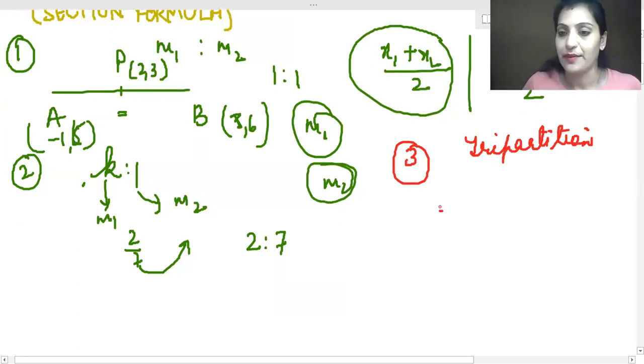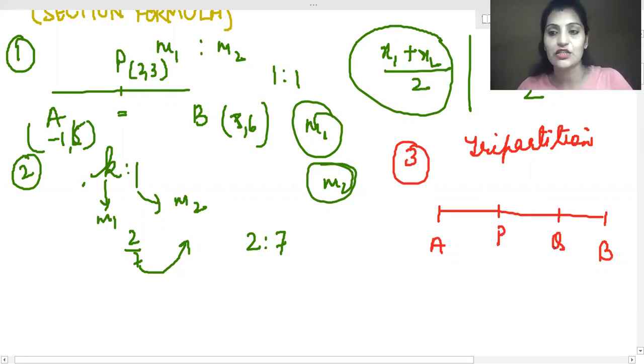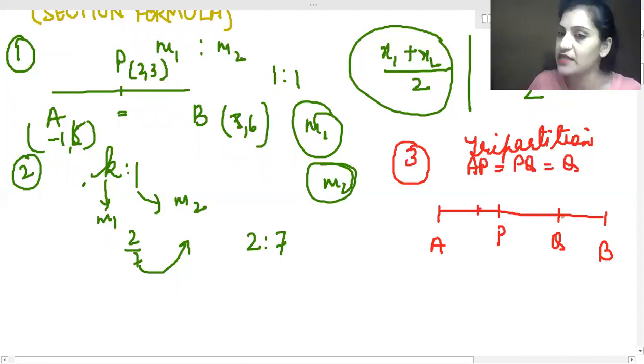Suppose there is a line segment A and B. You have two points in between. We have two points, and the two points divide in three parts. In this case, the three parts will be equal. So that means AP is equal to PQ, it is equal to QB. So what do we do in this case? We forget Q for a while. What will the ratio be? 1 is to 2. Do you understand?